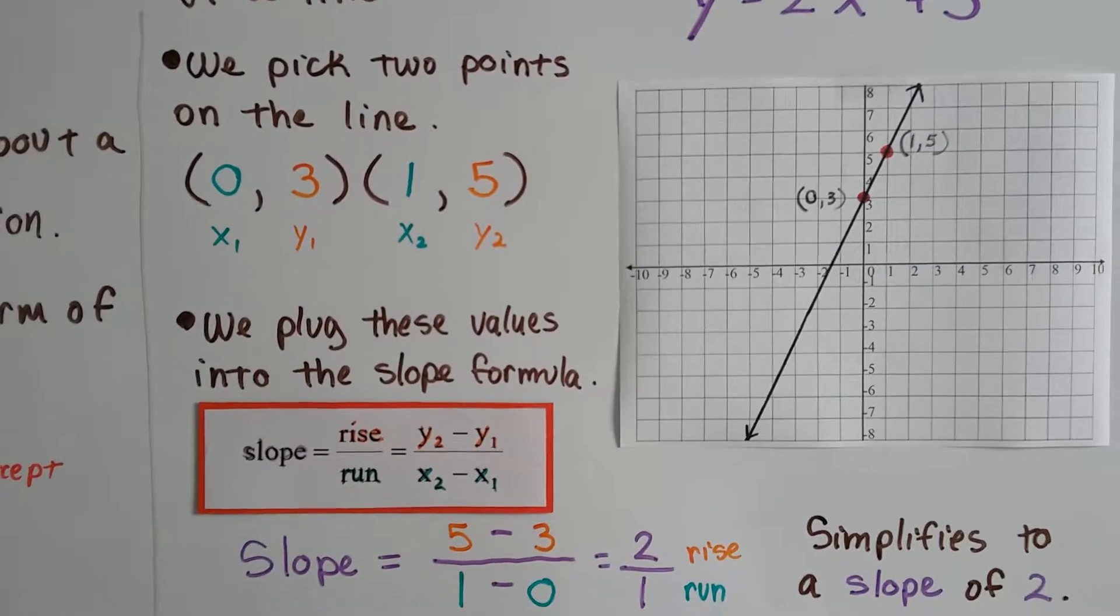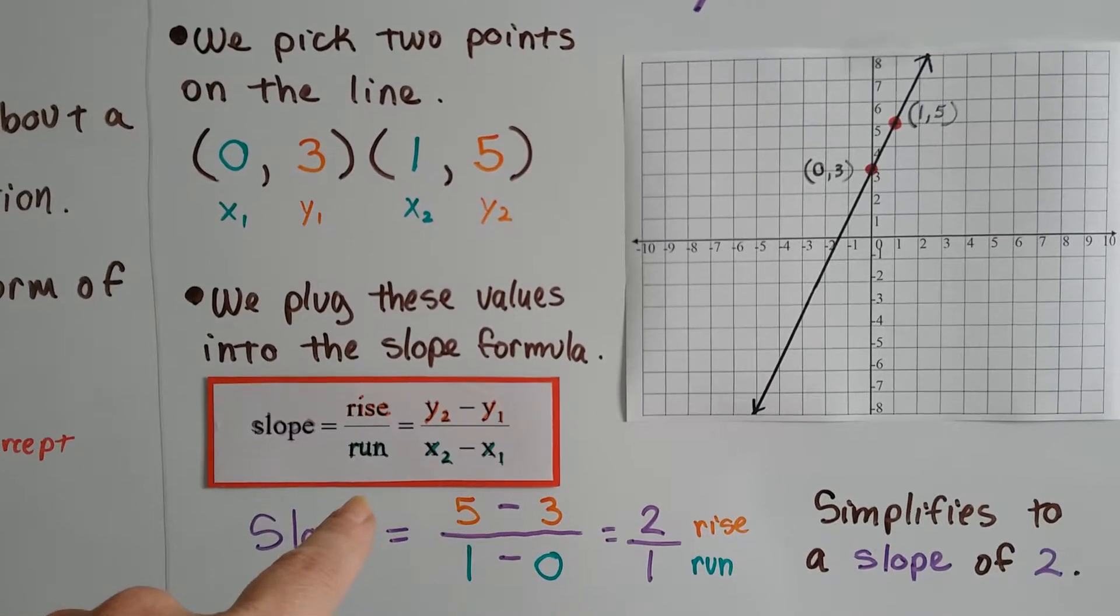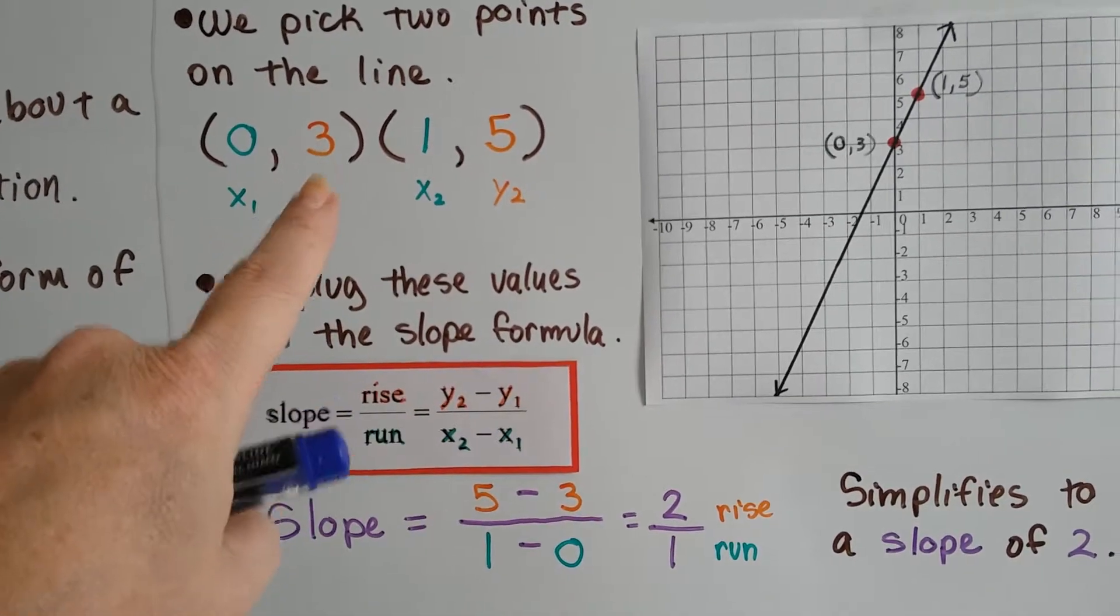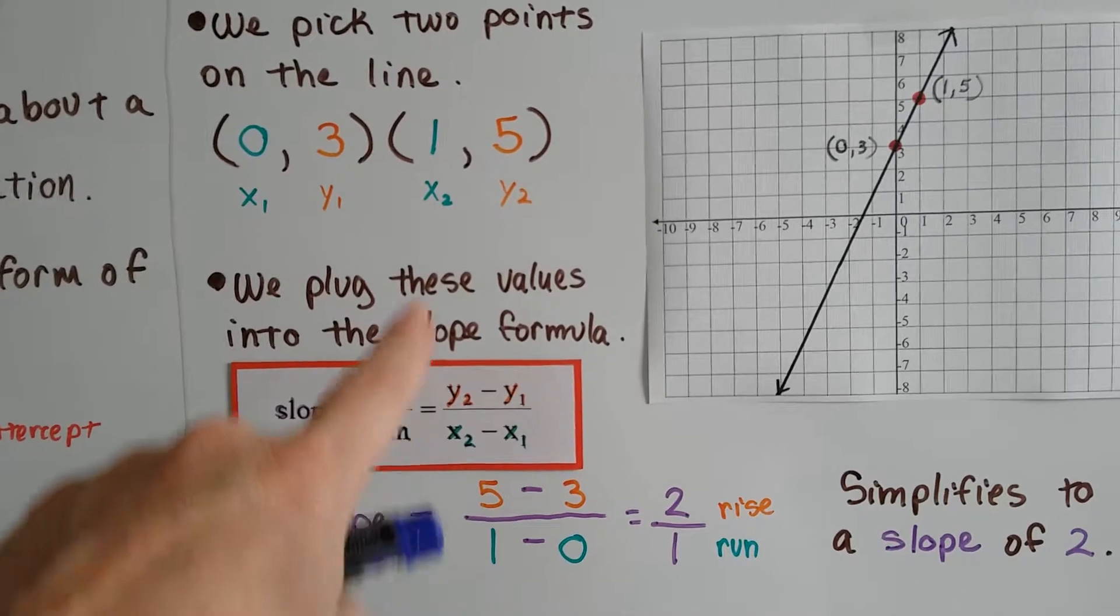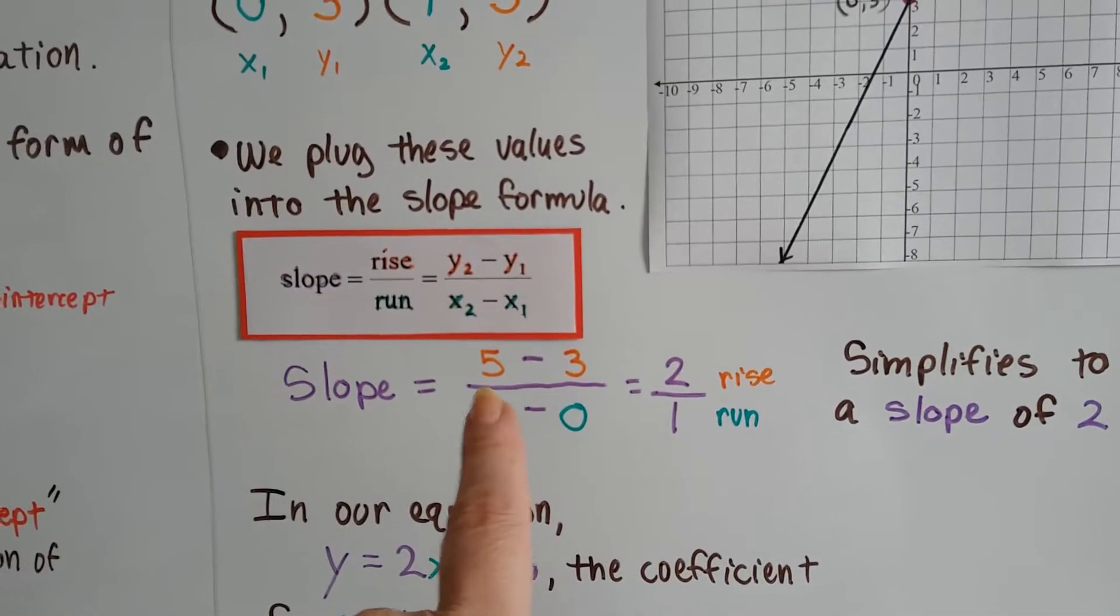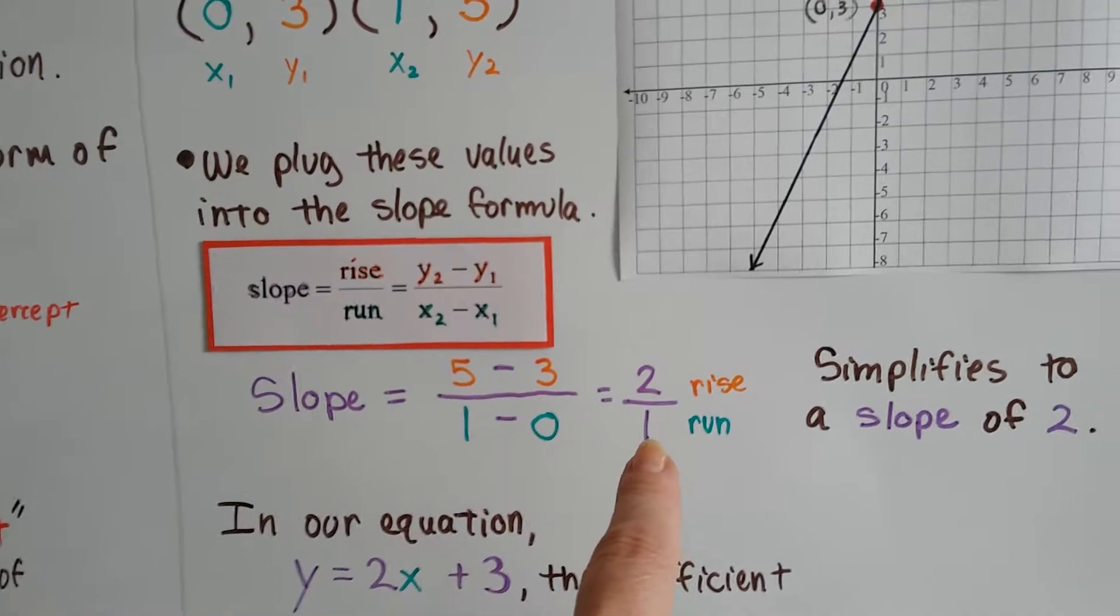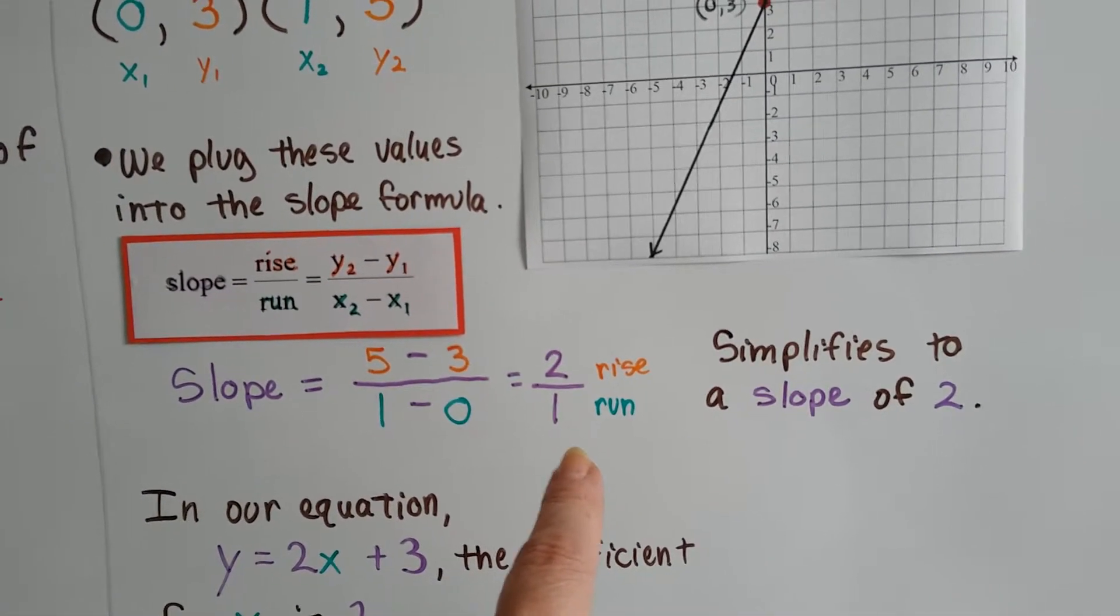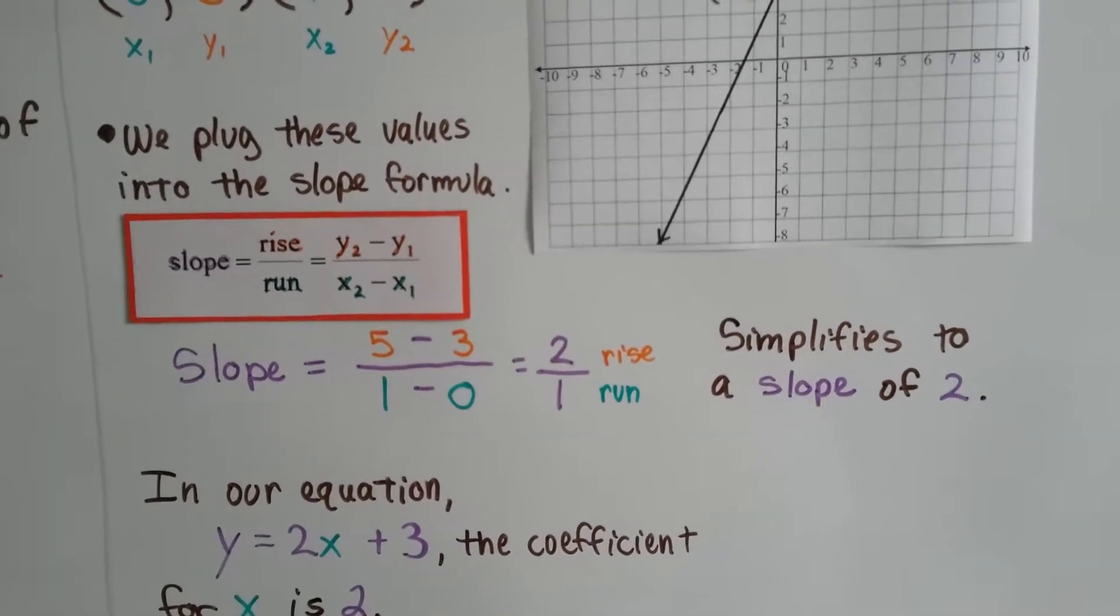We plug these values into the slope formula for our rise over our run, and we do the y2 minus y1, so it's going to be 5 take away 3. We do x2 minus x1, that's going to be 1 take away 0. We do our math, and we get 2 over 1. That's our rise over our run. Now, this simplifies to a slope of 2, because 2 over 1 as a fraction is 2.